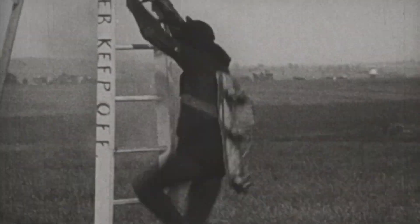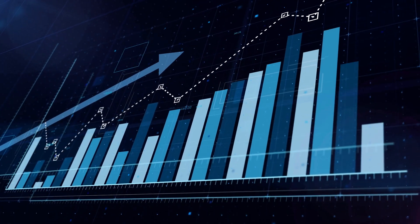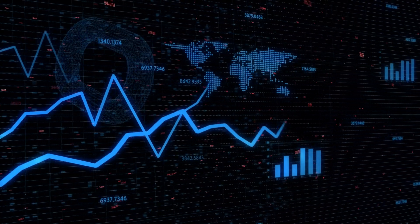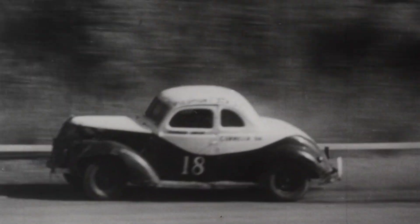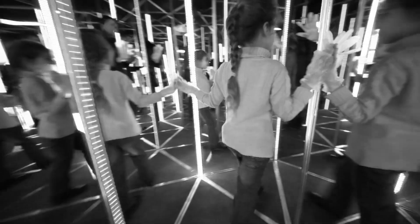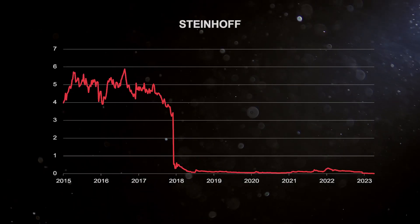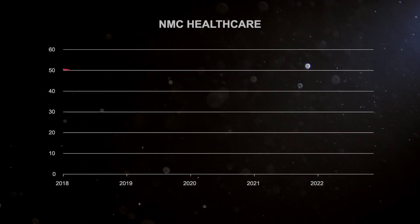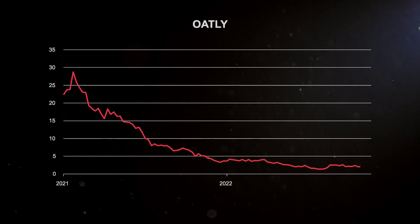Argonaut is different from most active fund managers in that we also short stocks in the expectation that their prices will fall, in addition to taking long positions which we expect to rise in price. By having both long and short positions, we are backing our stock picking to pick losers as well as winners, rather than being reliant on the direction of the stock market. Over many years, we have been particularly successful at identifying stocks whose value has just been an illusion, because they have been frauds like Steinhoff, Wirecard, NMC, overhyped like Beyond Meat, Oatly, Coinbase.